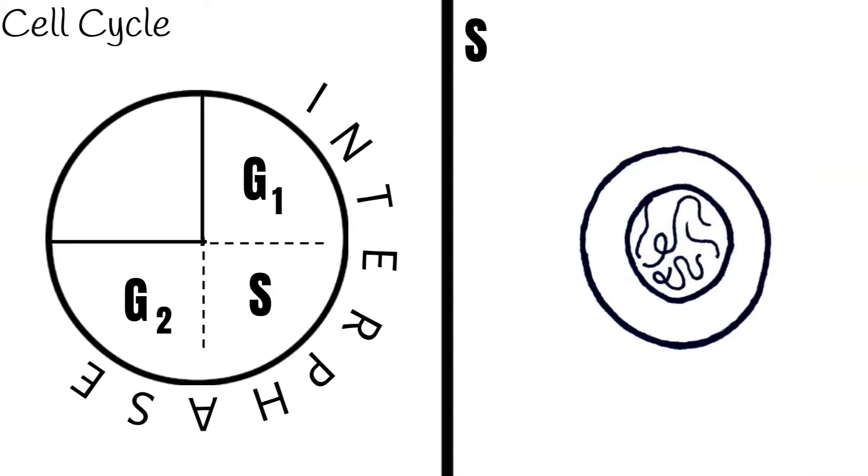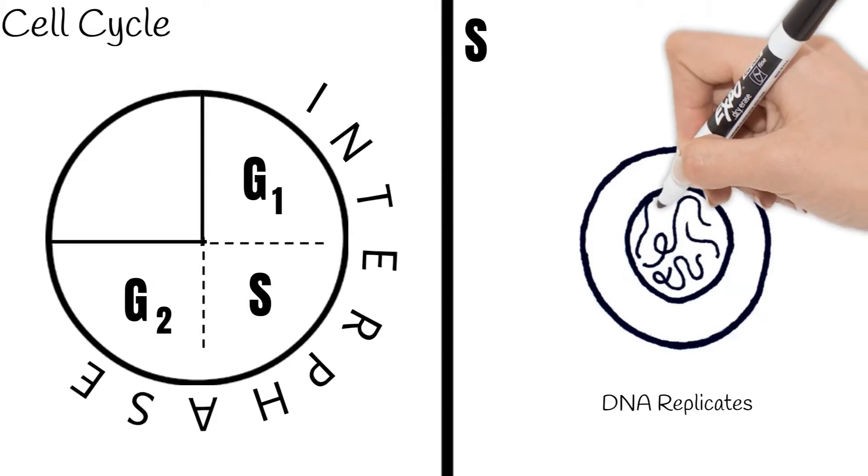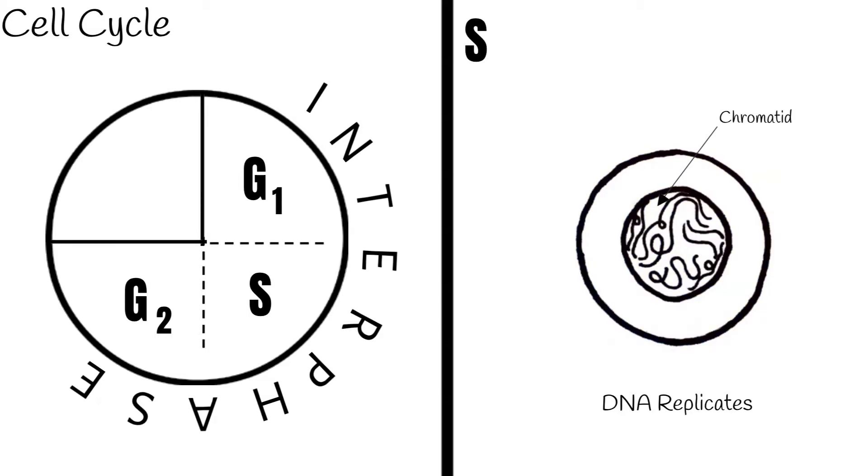During the S phase is when DNA is replicated. An unreplicated chromosome is shown as one strand and is often called a chromatid. All the chromosomes double during this replication, so then a human cell would now have 92 chromatids.